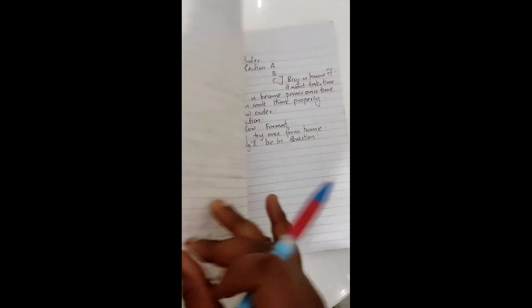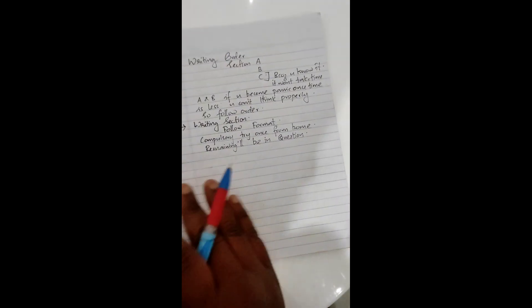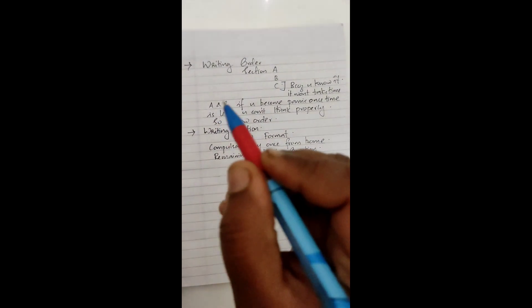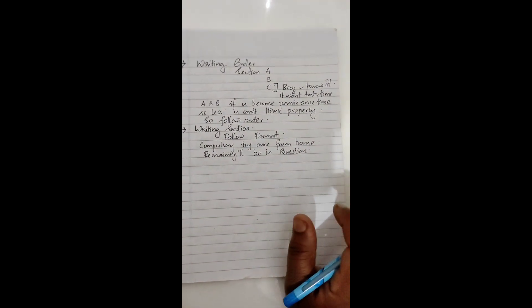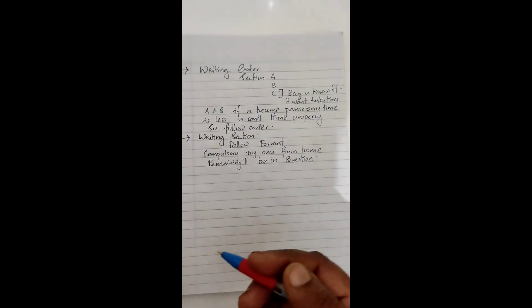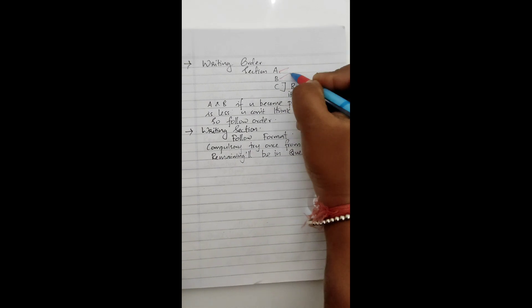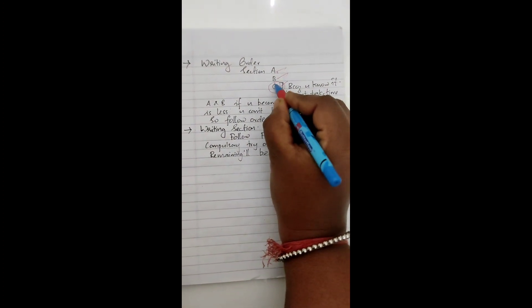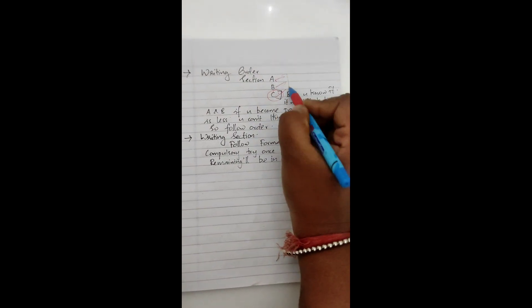Bahut sare bachche hoti hai, aadha question padhkar chod deti hai. Beta kabhi bhi aise mat karna. Woh aapko question paper mein kaun-kaun se aapko chunna hai, woh achse se aapko read karna hai. Kabhi kabhi kuch teacher suggest karthi hai better writing session se shuru karo, that will be really good, up to you. But mein suggest karthi hai writing order, because mere hisaab se woh sahi hai. Kyunki C section jo literature session hothi hai, woh aapka already known hai. A or B part unknown hai.